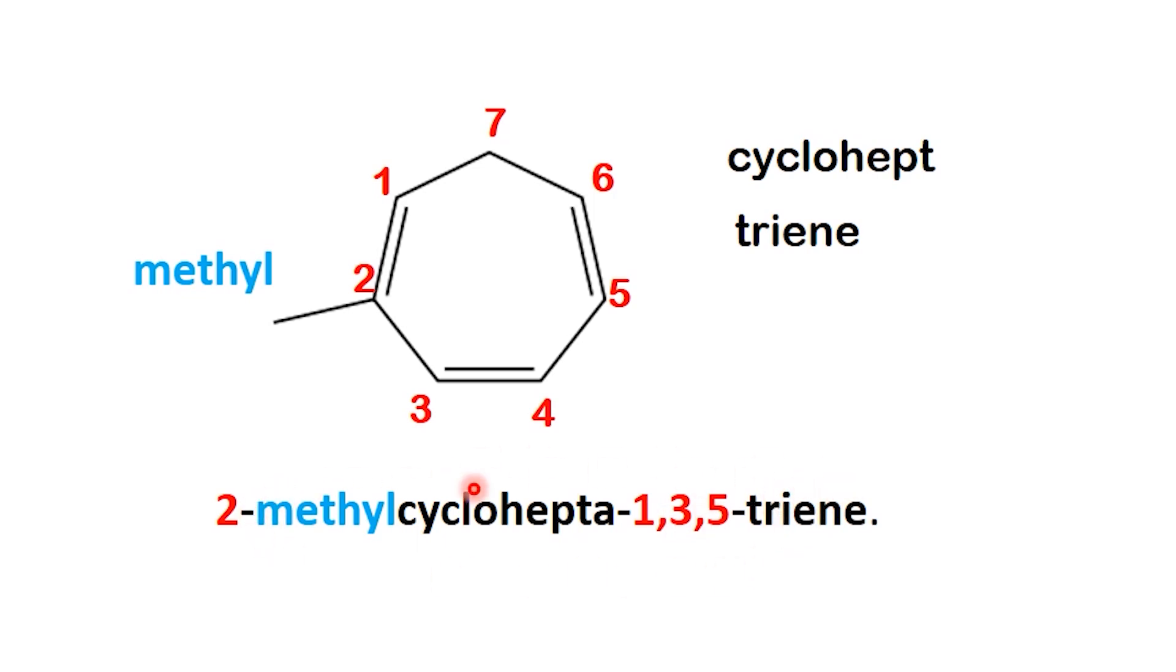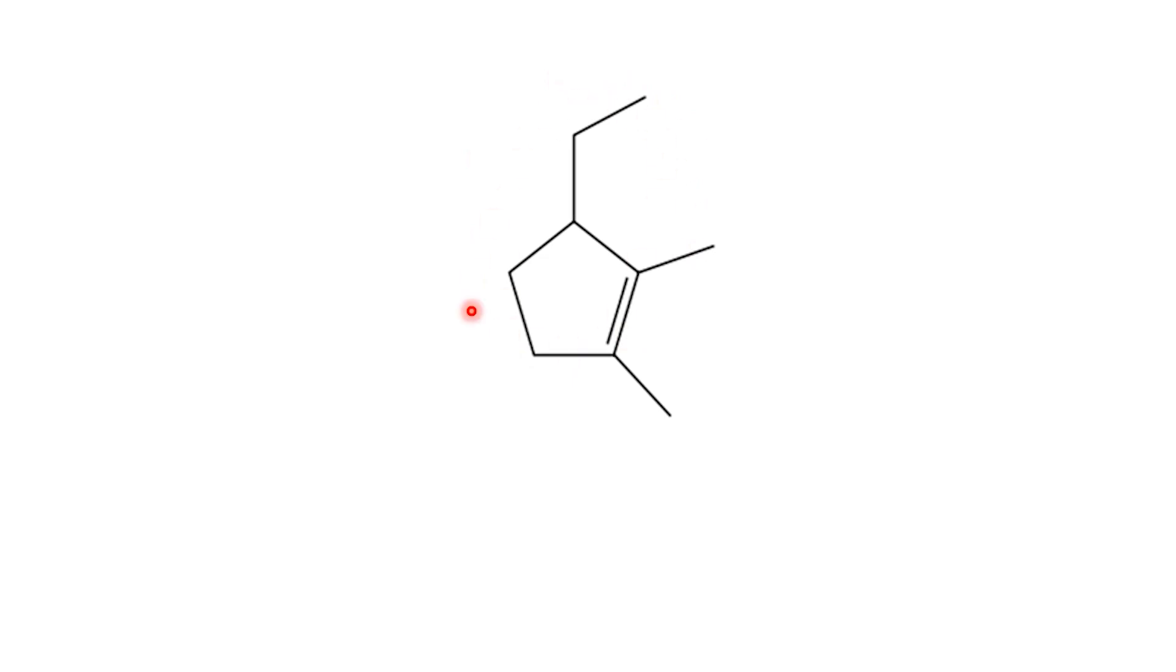Now that we've finished naming compound B, let's move on to compound C. This compound is built on a five-membered ring, so the parent name is cyclopent. We notice a double bond in the ring. To name it correctly, we begin numbering at the double bond, giving it the lowest possible position. That places it between carbons 1 and 2, which makes the parent structure cyclopent-1-ene.